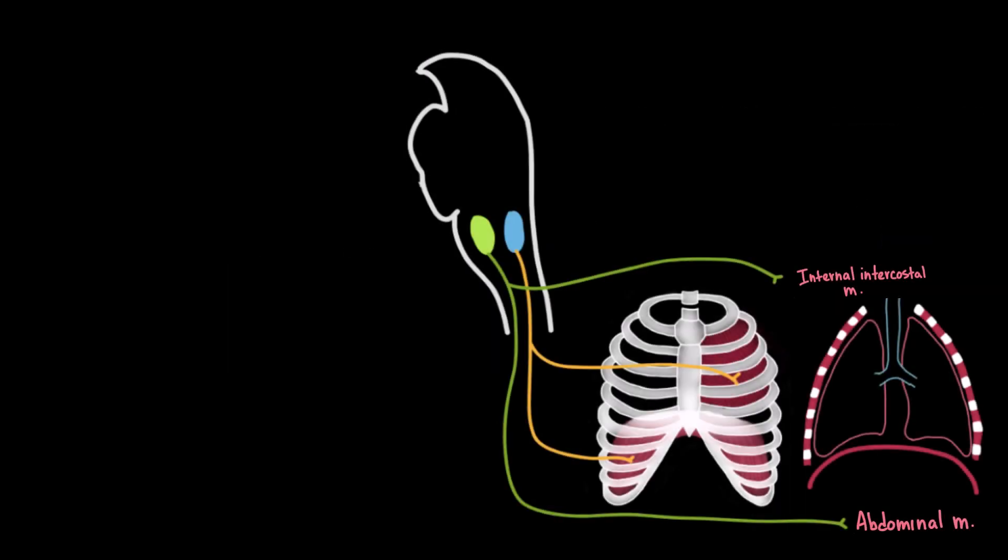Just above the medulla, in the pons, lies the pontine respiratory center. Although this center doesn't initiate breathing, it can modulate the medullary centers. It sends signals to the medullary centers, adjusting the duration and smoothness of inspiration and expiration. The pontine center has two main components.